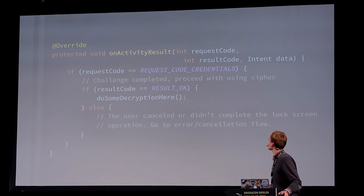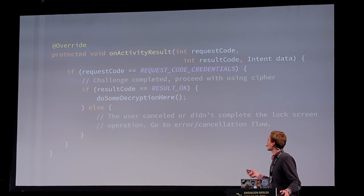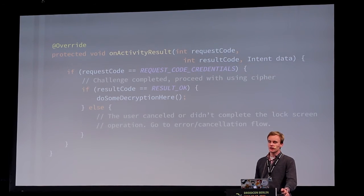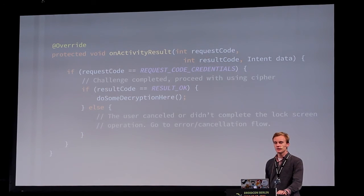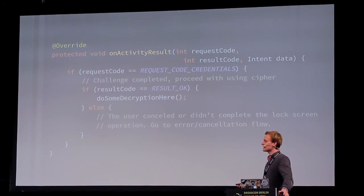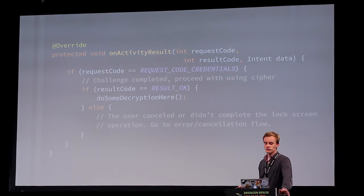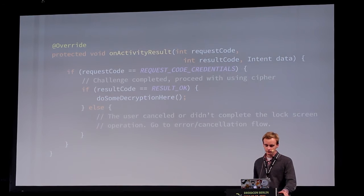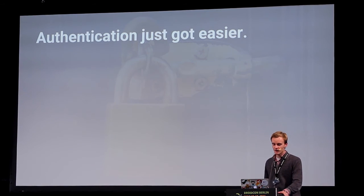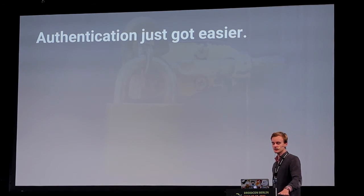In onActivityResult, check if the result is OK. If the system says the user recently authenticated, try again to get the key, initialize the cipher, and try to encrypt or decrypt the data — it should work without throwing the UserNotAuthenticatedException again.